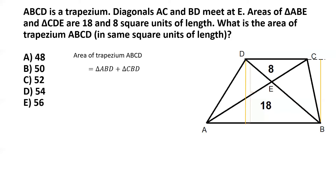The area of triangle ABD is one-half times base AB times altitude h. Similarly, the area of triangle CBD is one-half times CD times h. Adding these gives the area of the trapezium: one-half times h times (AB + CD).